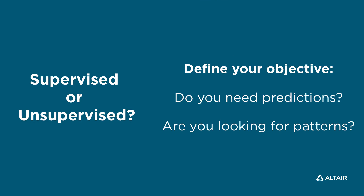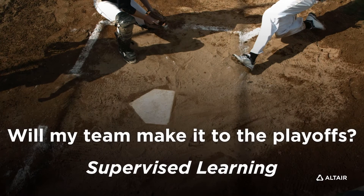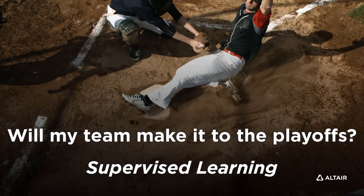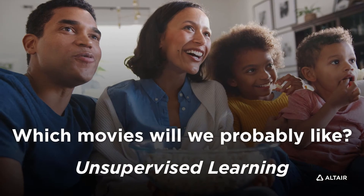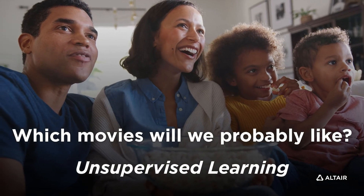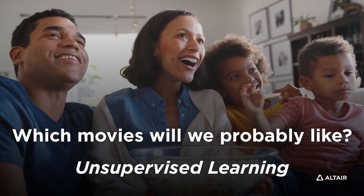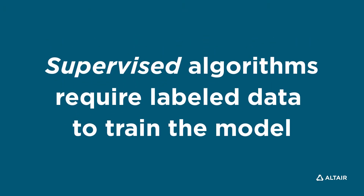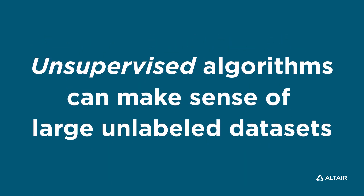Second, define your objective. Will your algorithm have to predict an outcome, or will it help you find patterns in your data? For example, supervised algorithms are great for predicting how well a baseball team will do as they advance towards the playoffs. Unsupervised algorithms are the right choice for recommending new movies to watch in an online streaming service. Supervised algorithms require labeled datasets so you can train your machine learning model, while unsupervised algorithms can make sense of huge amounts of unlabeled data.